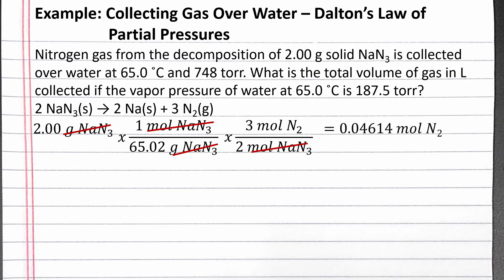Completing the calculation, we have 0.04614 moles nitrogen gas. Next, we can use Dalton's Law of Partial Pressures to find the partial pressure of nitrogen gas. We know the total pressure is 748 torr.